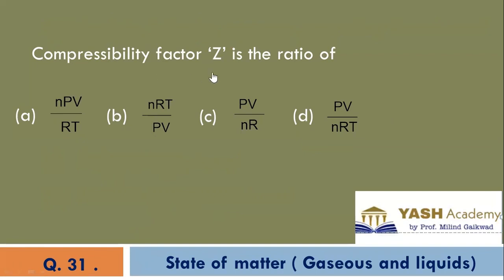Compressibility factor that is denoted by Z is the ratio of. D is the correct option.